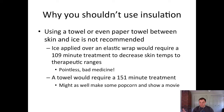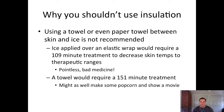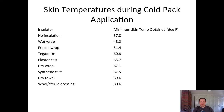Think about a busy athletic training facility where a patient says they have 10 minutes to ice before dinner. Putting an ice pack on for 10 minutes probably doesn't bring tissue temperature to a therapeutic range. Looking at the skin temperature chart — insulator type on the left, minimum skin temperature obtained on the right — no insulation achieves a minimum of about 37.8–38 degrees, while a wet wrap gets 48 degrees. A dry towel or sterile dressing insulates significantly more.